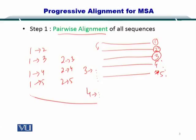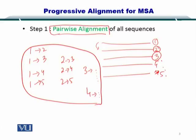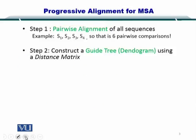Once you have these combinations of alignment, you are ready to move to the second step. In the second step, what you do is you construct a guide tree, or simply a dendrogram, using a distance matrix. Here you need to understand what is a distance matrix and what is a guide tree.